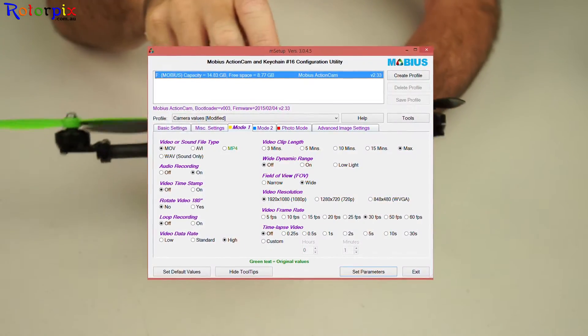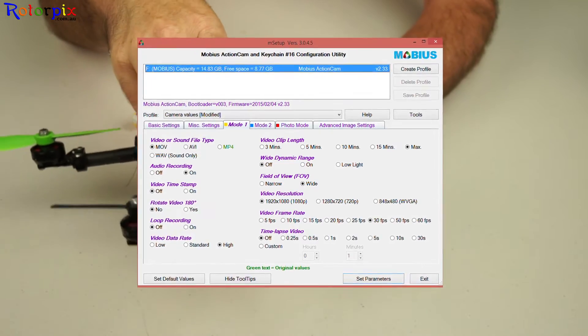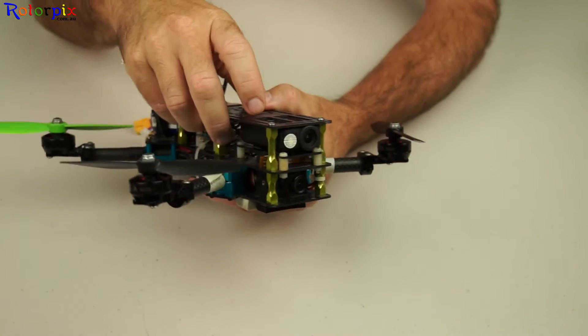Anyhow, the new firmware for the Mobius has a couple of cool little features, and one of them is this auto white balance lock.